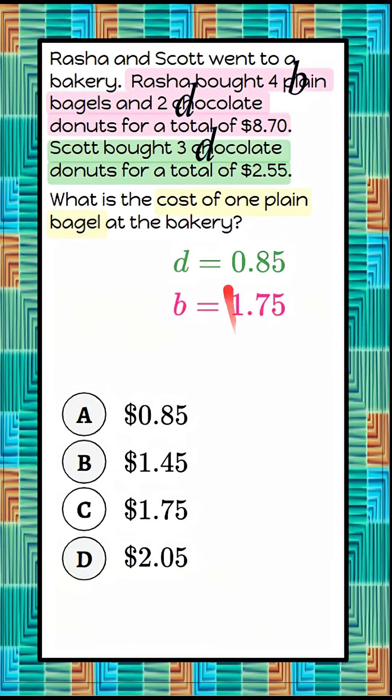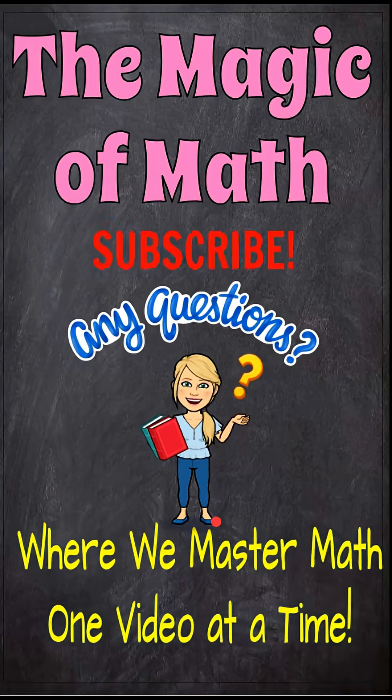Bring that forward, and I know that the cost of one plain bagel at the bakery is $1.75, which is answer choice C. Thanks for joining me today at The Magic of Math.